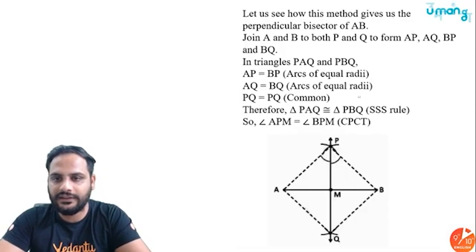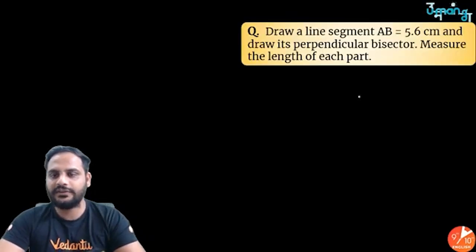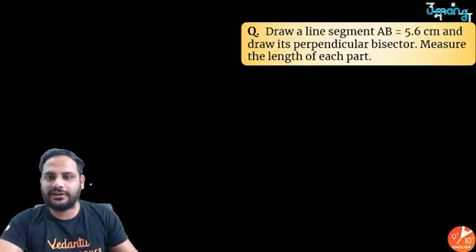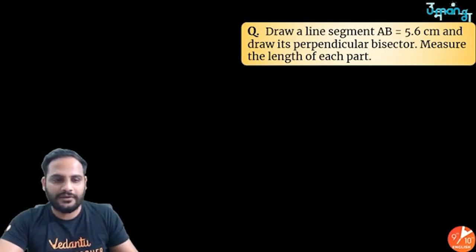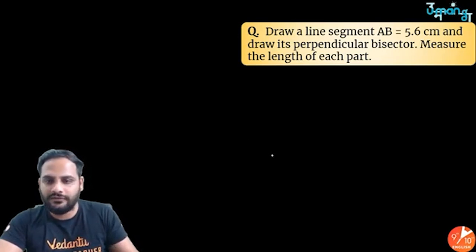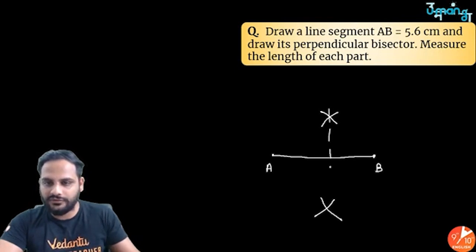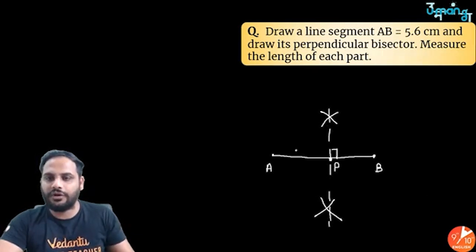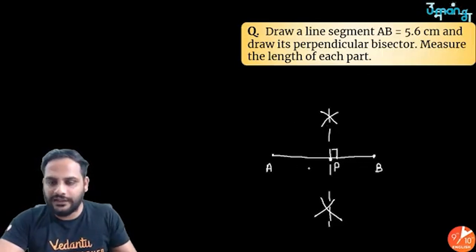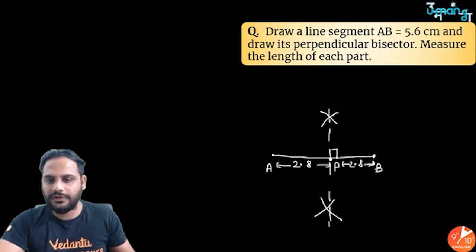Question: Draw a line segment AB of 5.6 cm and draw its perpendicular bisector. Draw AB of 5.6 cm using a scale. Open the compass to more than half the length, make one cut at the top and one at the bottom from each endpoint, then join both intersection points to get the perpendicular bisector. Each part will measure 2.8 cm on either side.